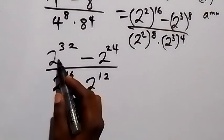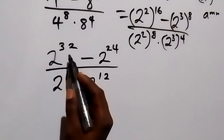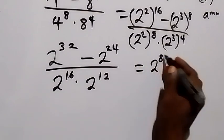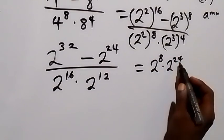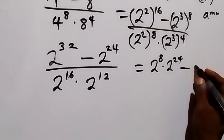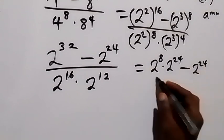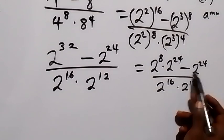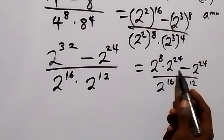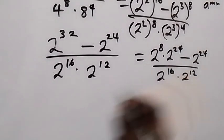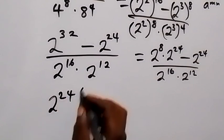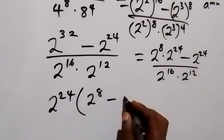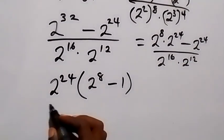In the next step we can separate 2 raised to power 24 out of this by writing 32 as 8 plus 24. When we write 2 raised to power 8 plus 24, that's the same as writing 2 raised to power 8 times 2 raised to power 24. So summarizing: that will be 2 raised to power 8 times 2 raised to power 24 minus 2 raised to power 24, over 2 raised to power 16 times 2 raised to power 12. We then factor 2 raised to power 24 out of the bracket, leaving 2 raised to power 8 minus 1.